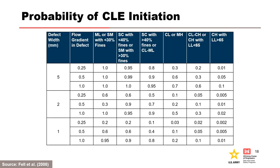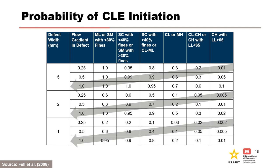This table further illustrates the influence of the likelihood of initiation of concentrated leak erosion as a function of soil type, crack width, and hydraulic gradient in the crack. It shows the probability of initiation in 1 millimeter, 2 millimeter, and 5 millimeter wide cracks for different soil types. Dispersive soils have similar probabilities of initiation as ML and SM soils. Erodibility increases from upper right to lower left in the table. For each crack width, likelihood increases from top to bottom with increasing hydraulic gradient.